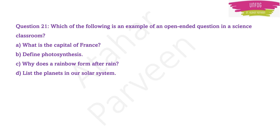The first question of this session is: which of the following is an example of an open-ended question in a science classroom? Four options are given: A) What is the capital of France? B) Define photosynthesis. C) Why does a rainbow form after rain? D) List the planets in our solar system.